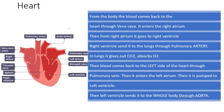A very important thing is your cardiac cycle. This cycle basically tells how the blood flows from your heart to the whole body. Let's start off when the blood is coming back from the body.